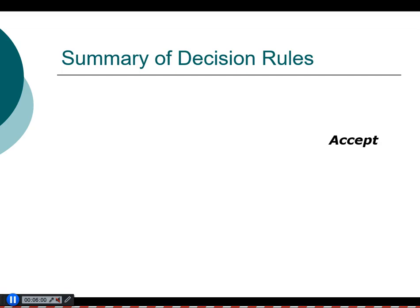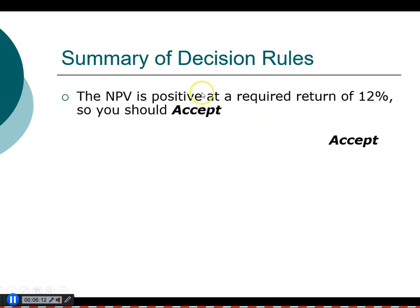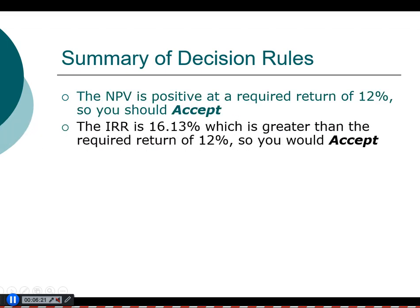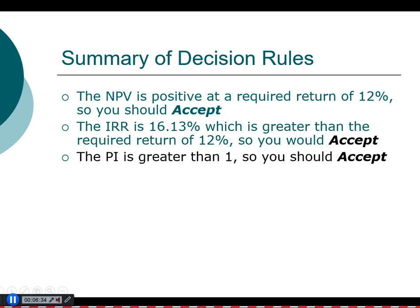Now that we've covered all three decision rules, let's summarize what we've learned. For this particular project, the NPV is positive at the required return of 12%, so we accept under the NPV rule. The internal rate of return is 16.13%, which is greater than the required return of 12%, so we accept under the IRR rule. The profitability index is greater than one, so we also accept under the PI rule. All three methods give the same conclusion: this is a valuable project.